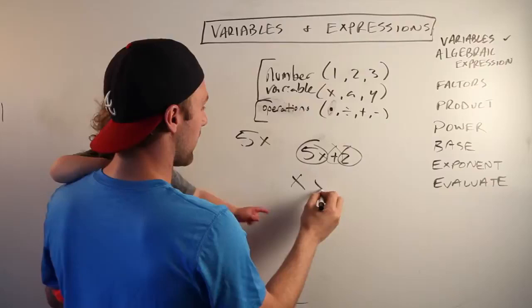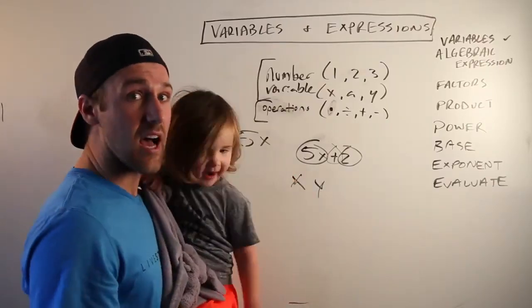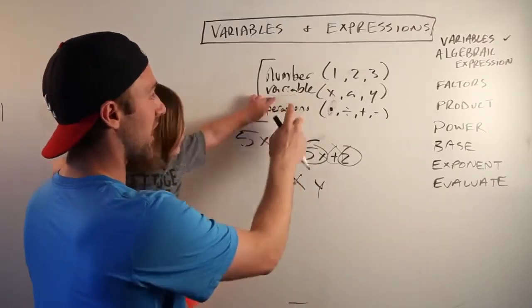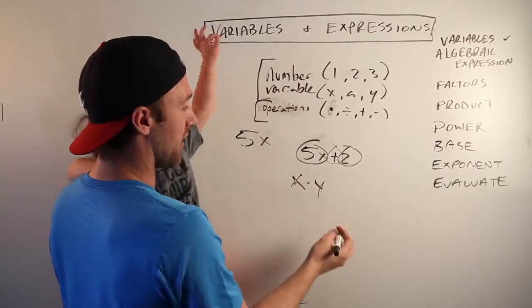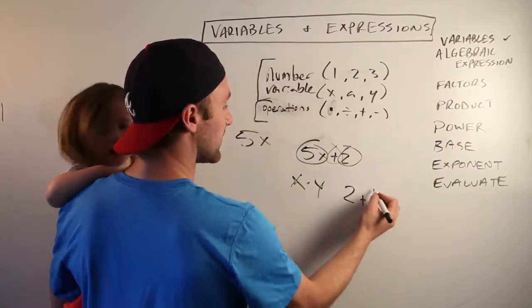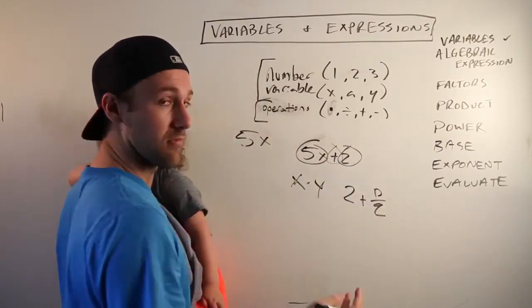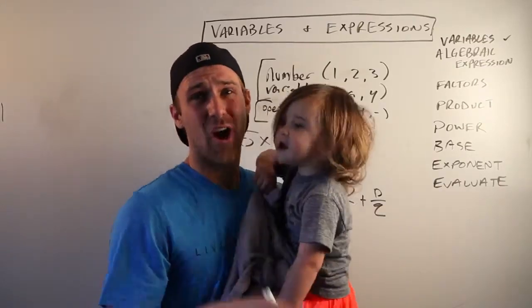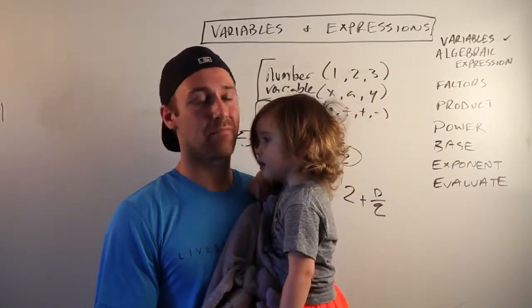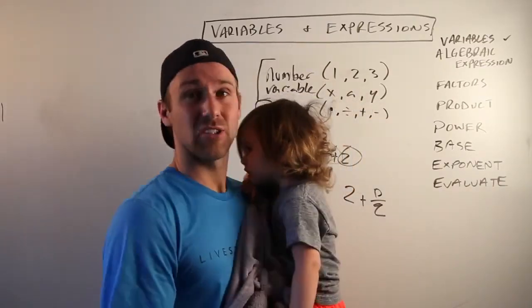Let's say we do xy - x times y. You've got two variables and you've got an operation, they're being multiplied. What about 2 plus p over q? Heck yeah, that's an algebraic expression all day. And that's what algebraic expressions are.